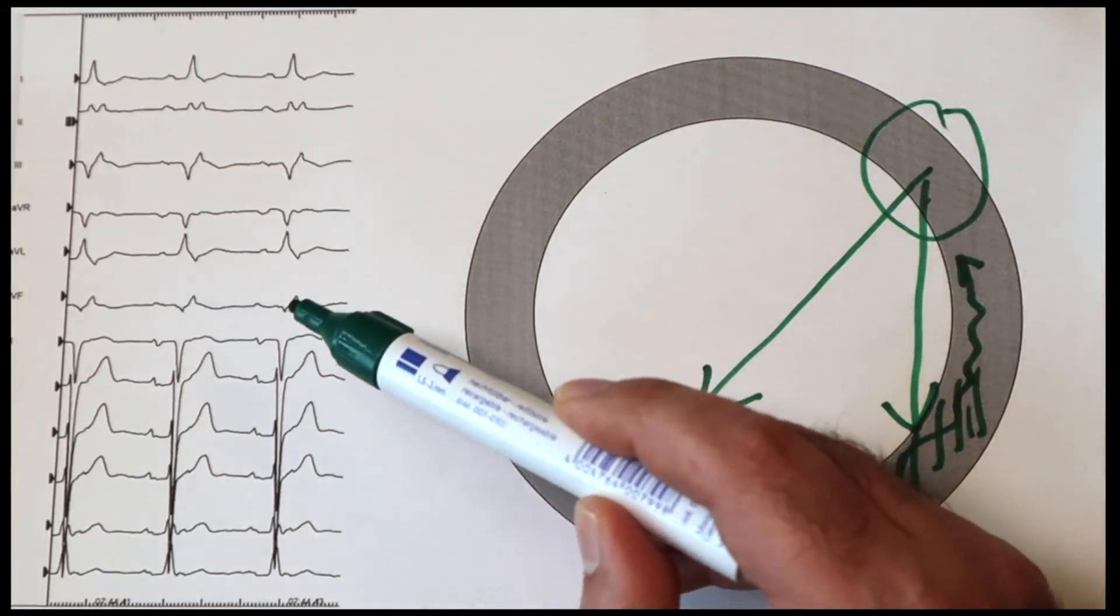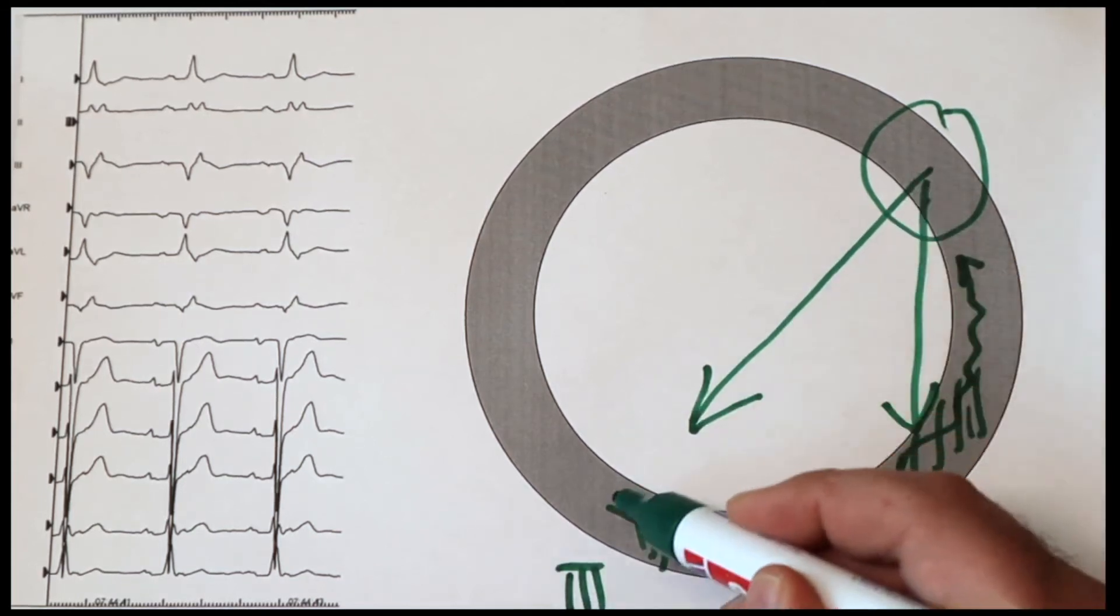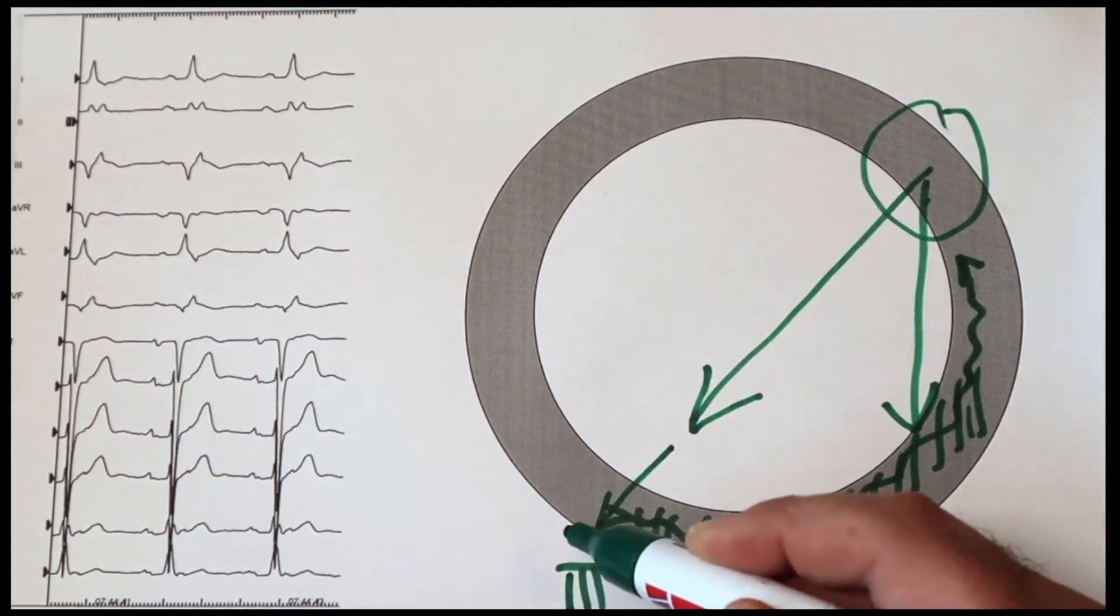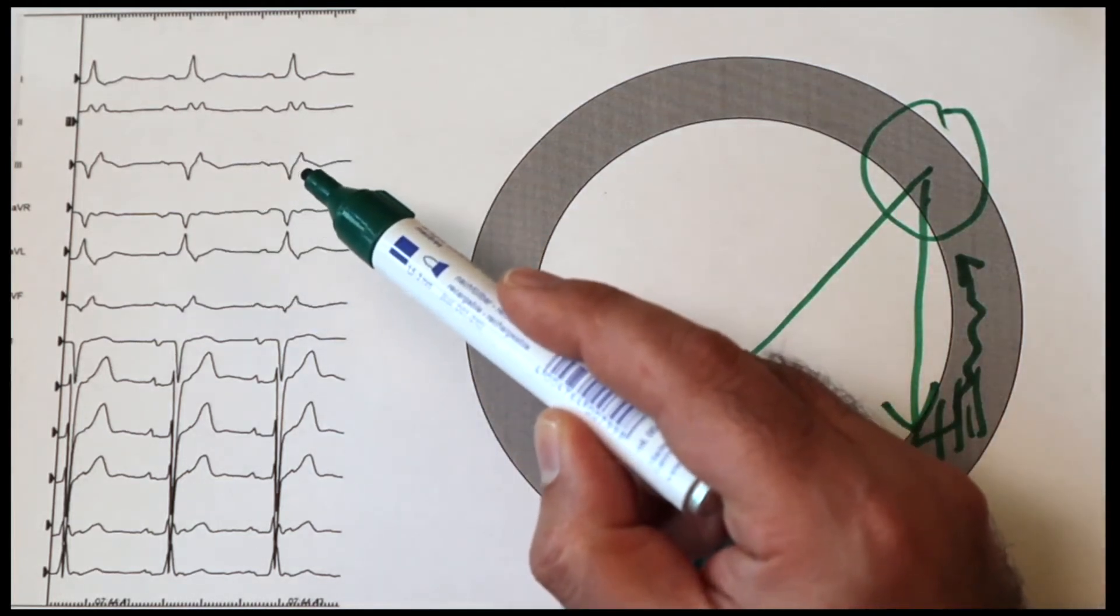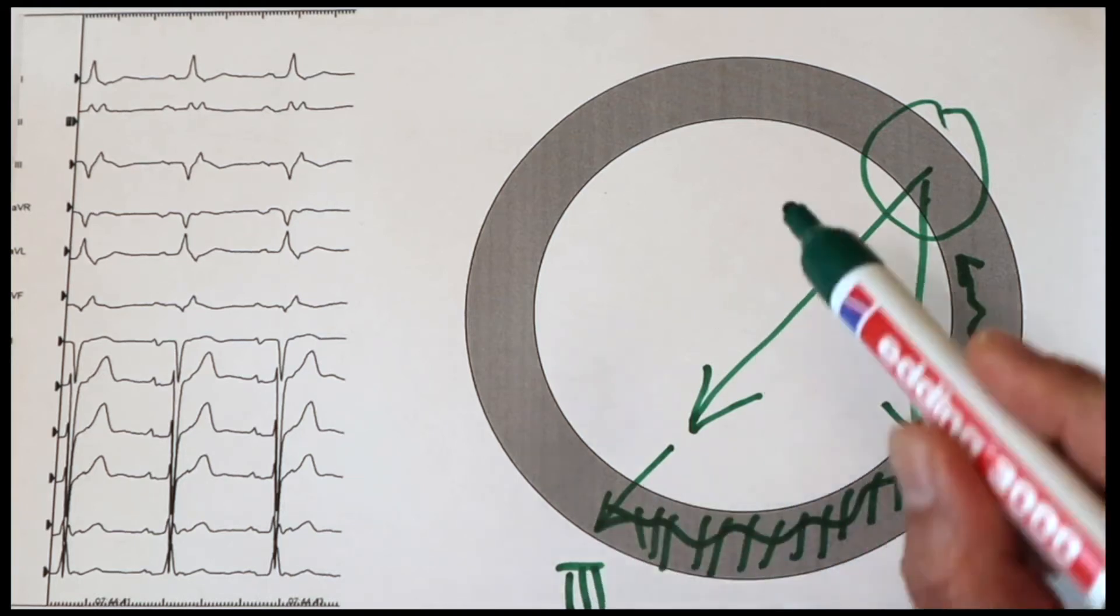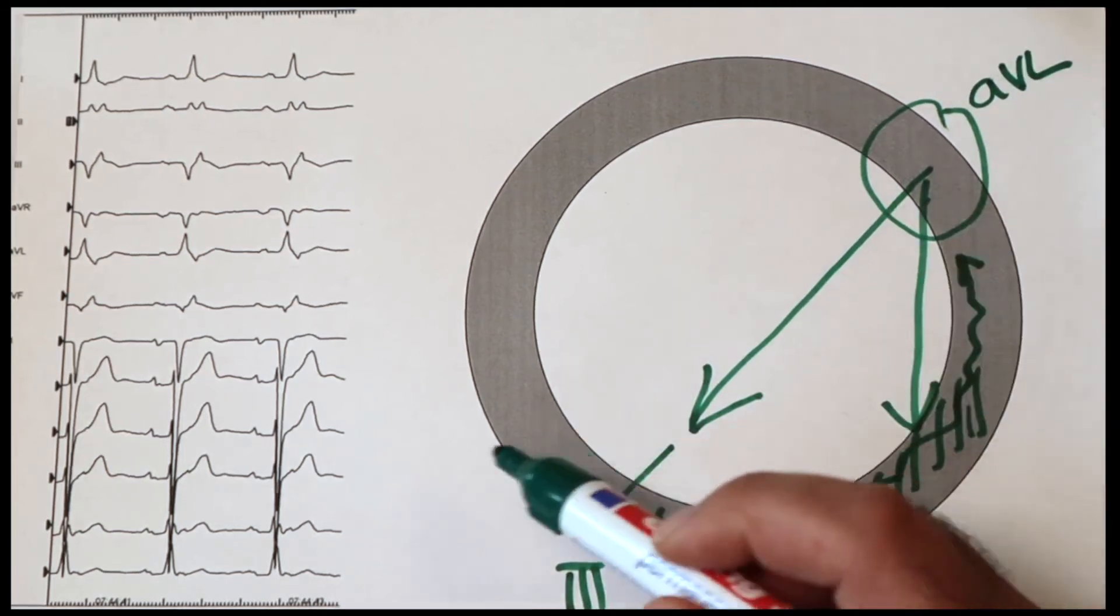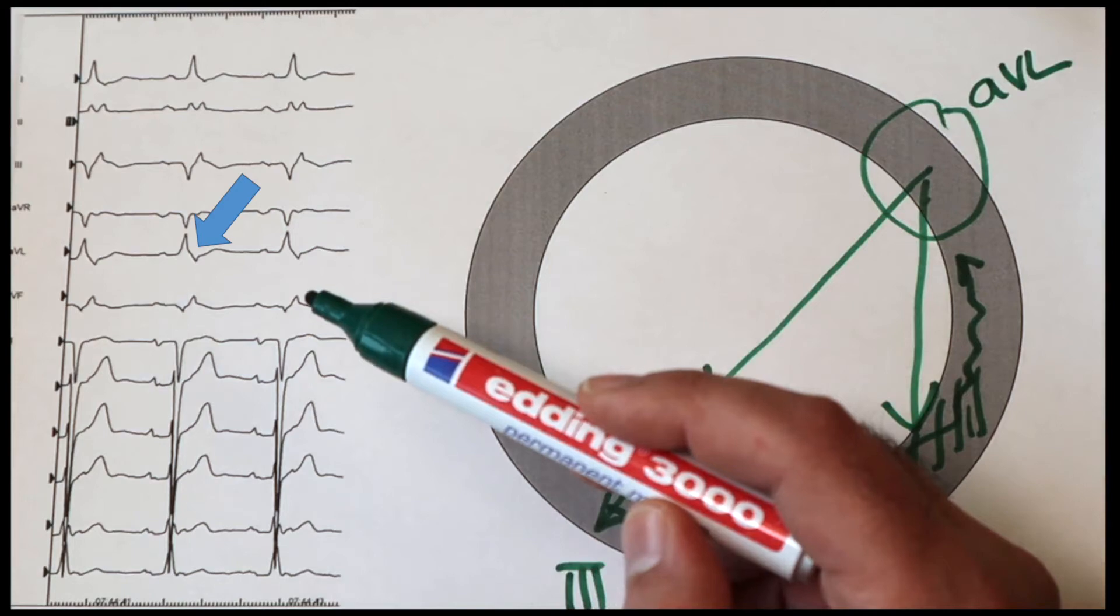And exactly that's the reason that we see these positive deflections in II, III, and also aVF. And because this deflection goes directly toward lead III, then the most positive deflection is in lead III compared to lead II and also aVF. And as you can see, if the most positive deflection is in lead III, then the most negative one should be in lead aVL, which we see clearly here in the ECG.